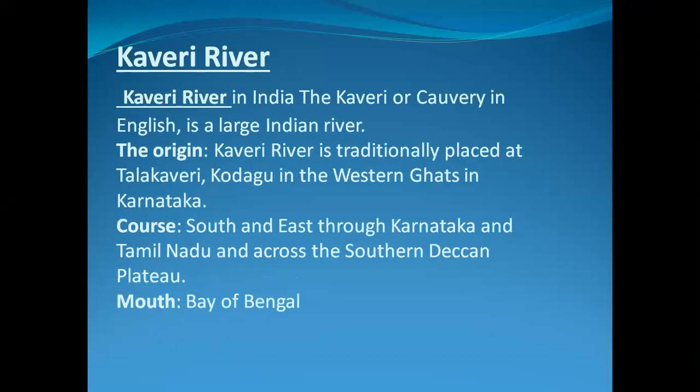Kaveri river — the Kaveri, or Cauvery in English, is a large Indian river. Its origin is traditionally placed at Talakaveri-Hodagu in the Western Ghats in Karnataka. It courses south and east through Karnataka and Tamil Nadu, and across the southern Deccan Plateau, with its mouth at the Bay of Bengal.